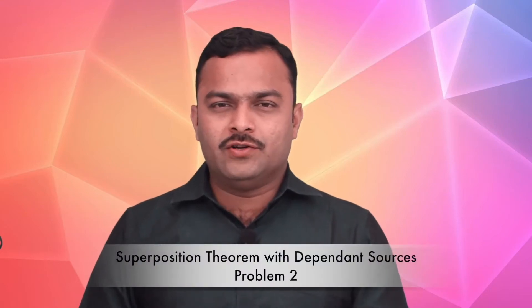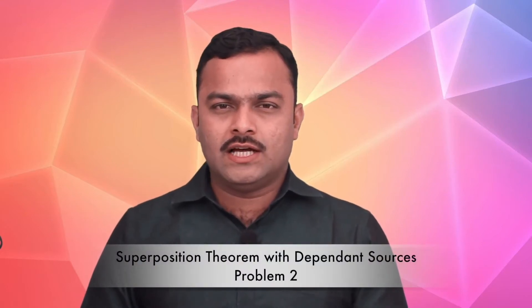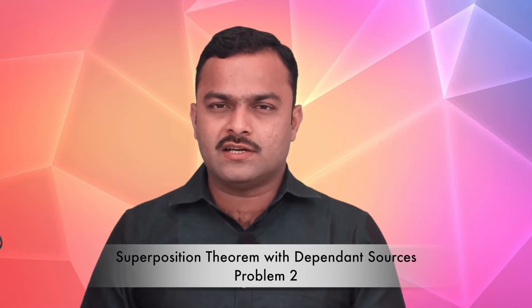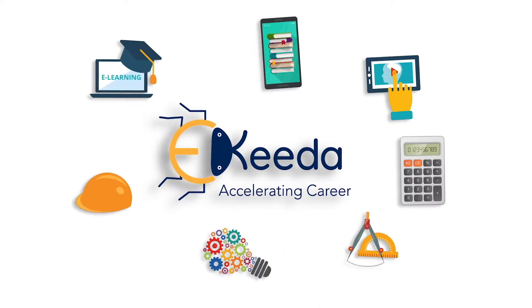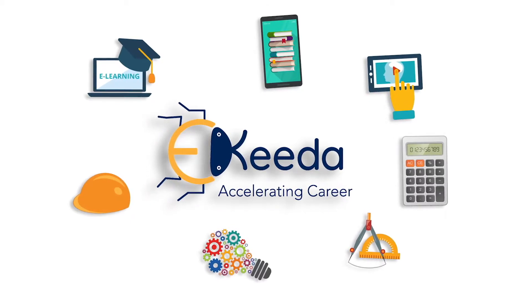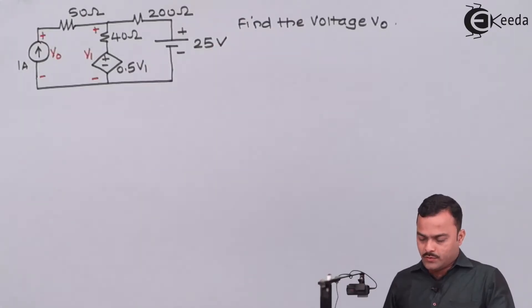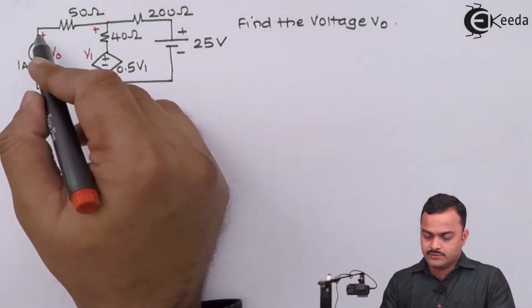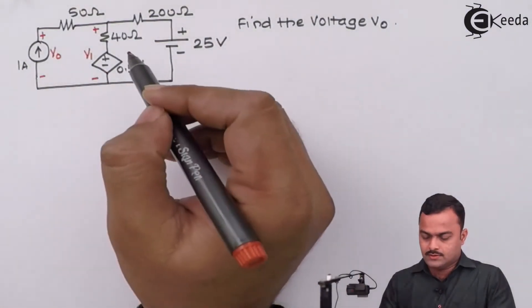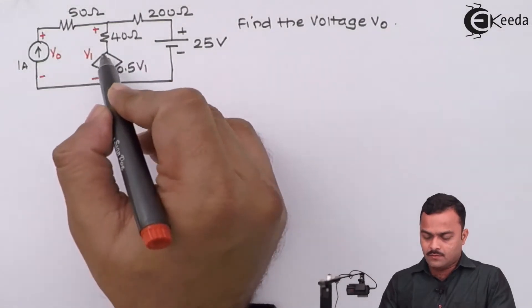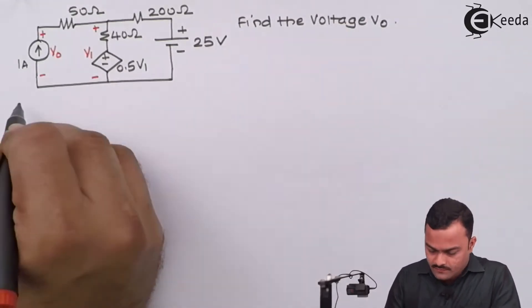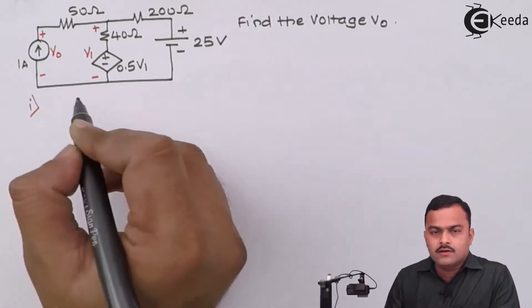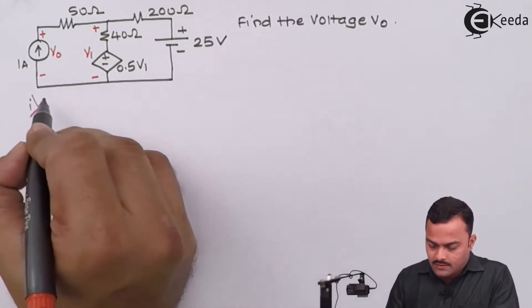Hi friends. In this video we are going to see how to apply the superposition theorem in a circuit consisting of dependent as well as independent sources. In this problem we have to get a voltage V0 which is across a current source, using superposition theorem. The circuit consists of one voltage-dependent voltage source. In the first place, we are going to consider one ampere acting alone.